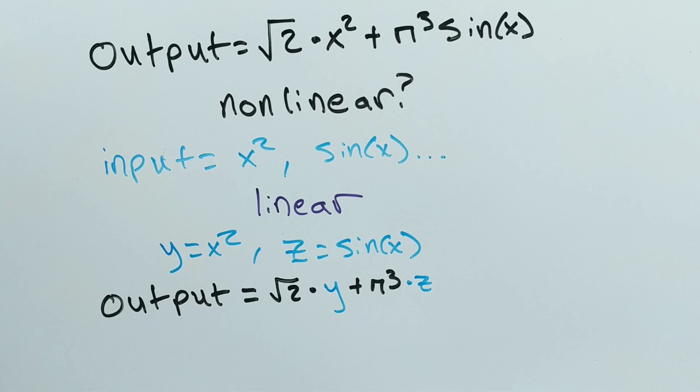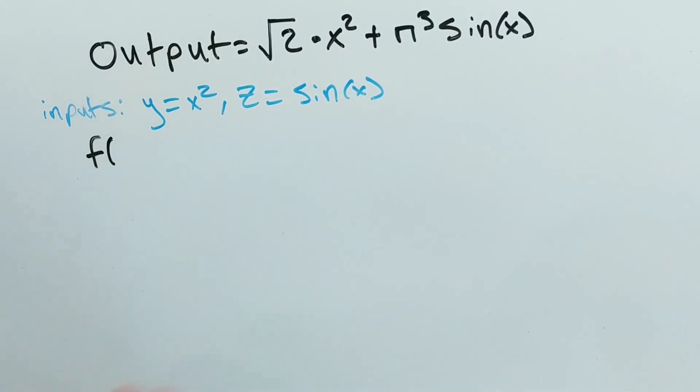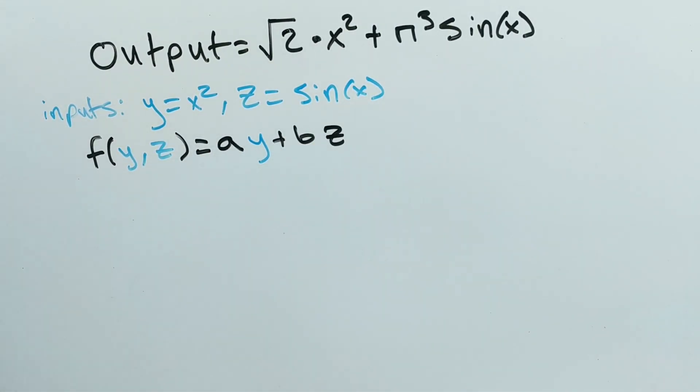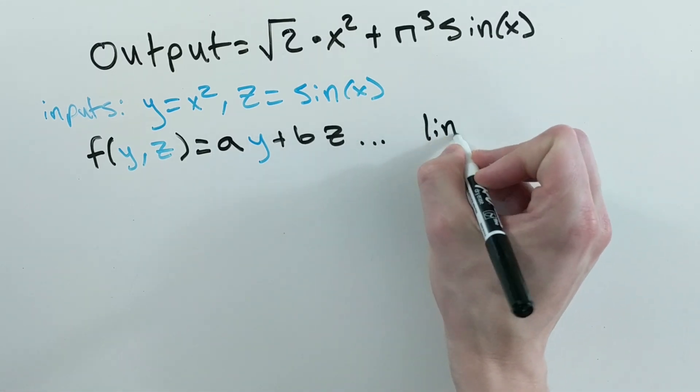Note that we don't care that the constants are the square root of 2 and pi cubed, those are just constants that don't depend on the input. We can rewrite this function as f of y z equals a times y plus b times z and see more clearly that this is a linear function.